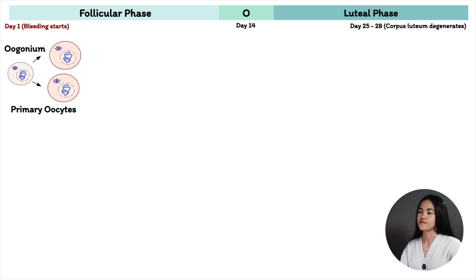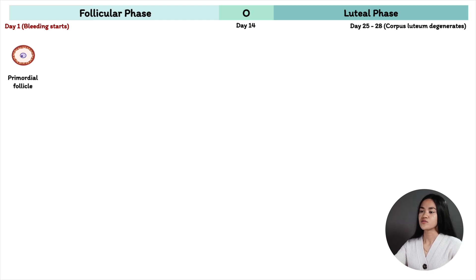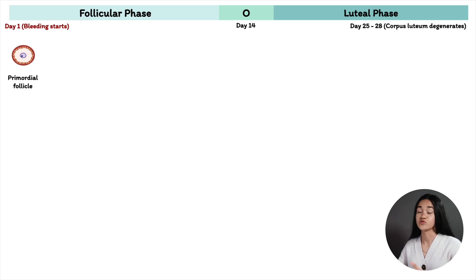Let's go through the follicular phase, which is an ovarian event. Follicles start as primordial follicles — a primordial follicle has one primary oocyte arrested in prophase 1, and it's surrounded by a basal lamina and a single layer of cells called granulosa cells. This primordial follicle has the potential to develop into a mature Graafian or dominant follicle if selected, and it has the potential to ovulate or undergo atresia, which is cell death.